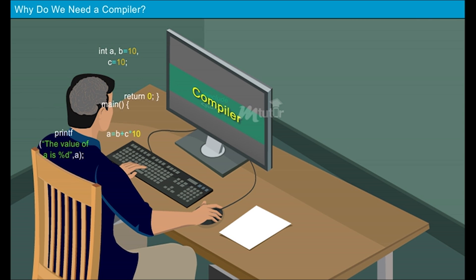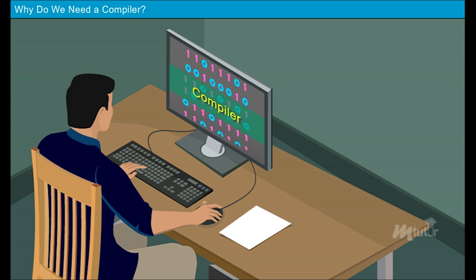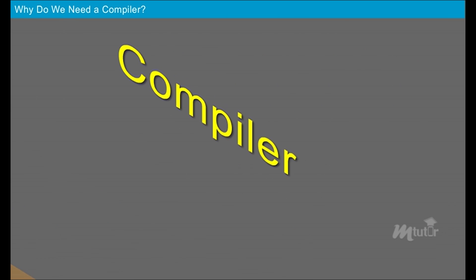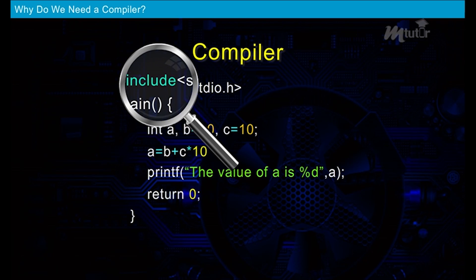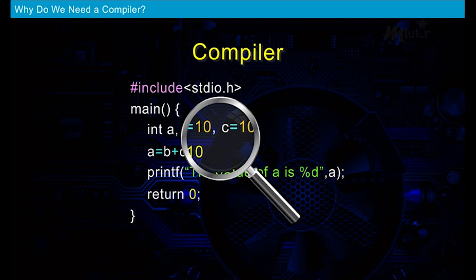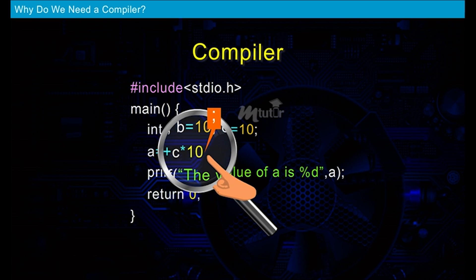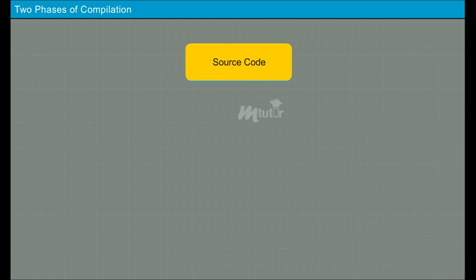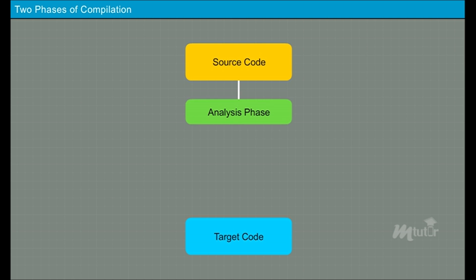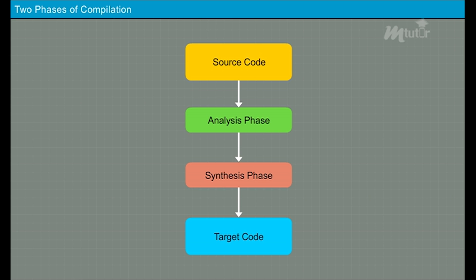A compiler converts the source program into its equivalent machine code. It also scans the entire program and spots any errors present in it. The compilation process is carried out in two broad phases, which can be broadly grouped into the analysis phase and the synthesis phase.